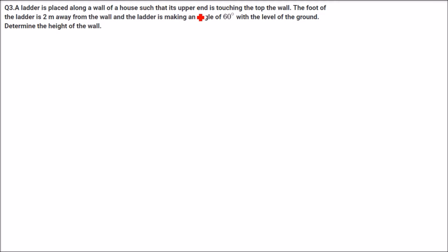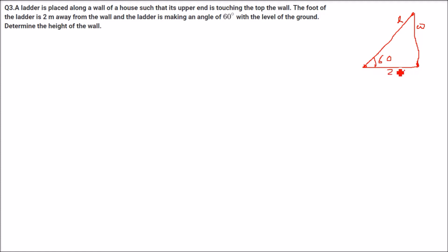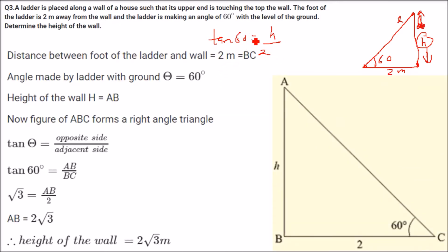A ladder is placed along a wall of a house such that its upper end is touching the top of the wall. The foot of the ladder is 2 meters away from the wall, and the ladder makes 60 degrees with the level ground. Determine the height of the wall. Let the height be h. We use tan 60, which is perpendicular by base, so root 3 equals h by 2, giving h equal to 2 root 3.